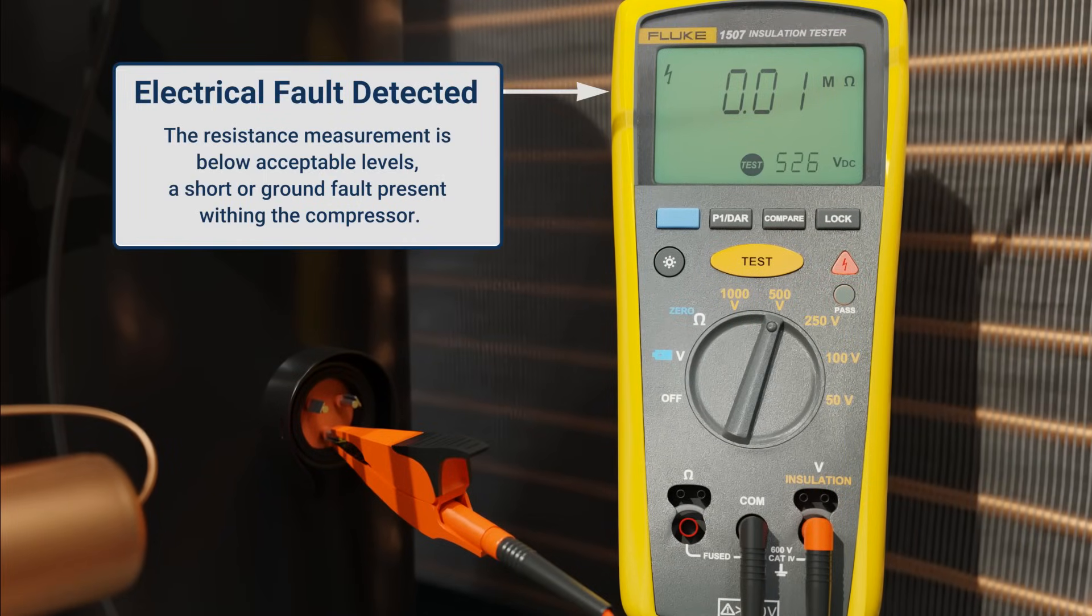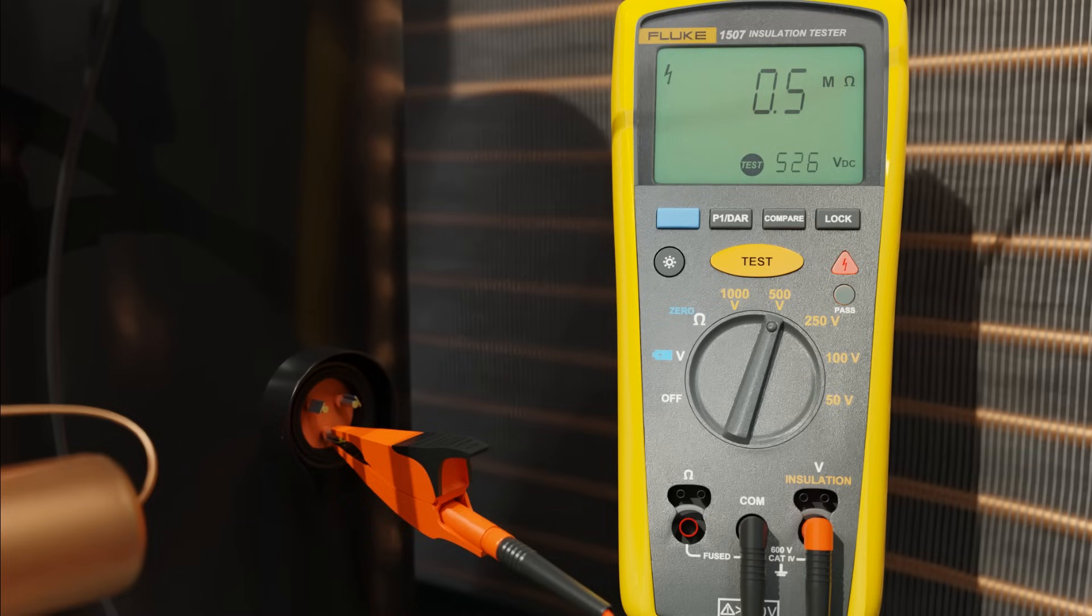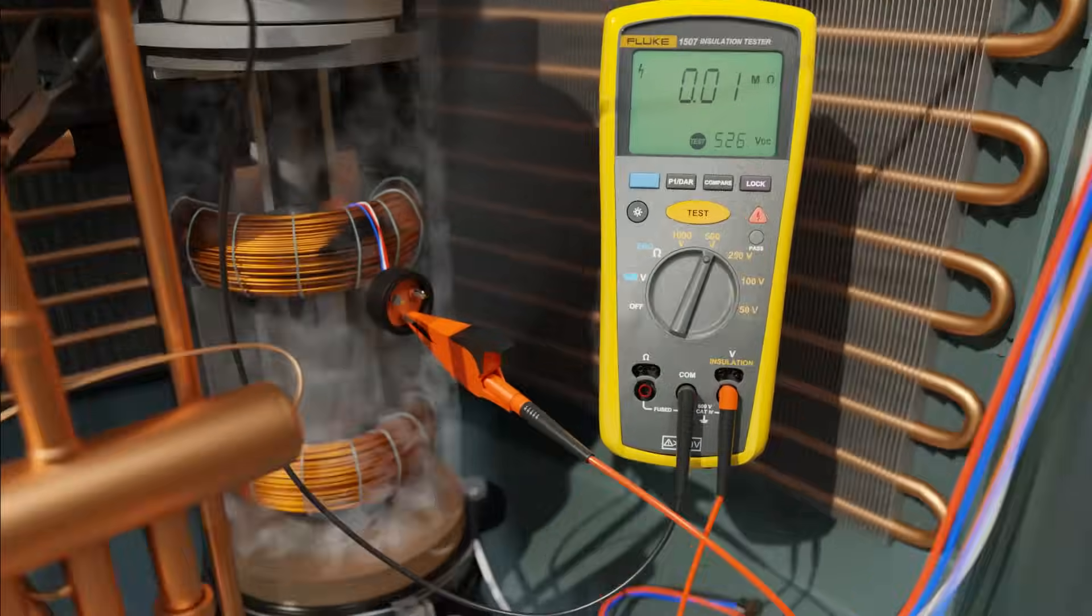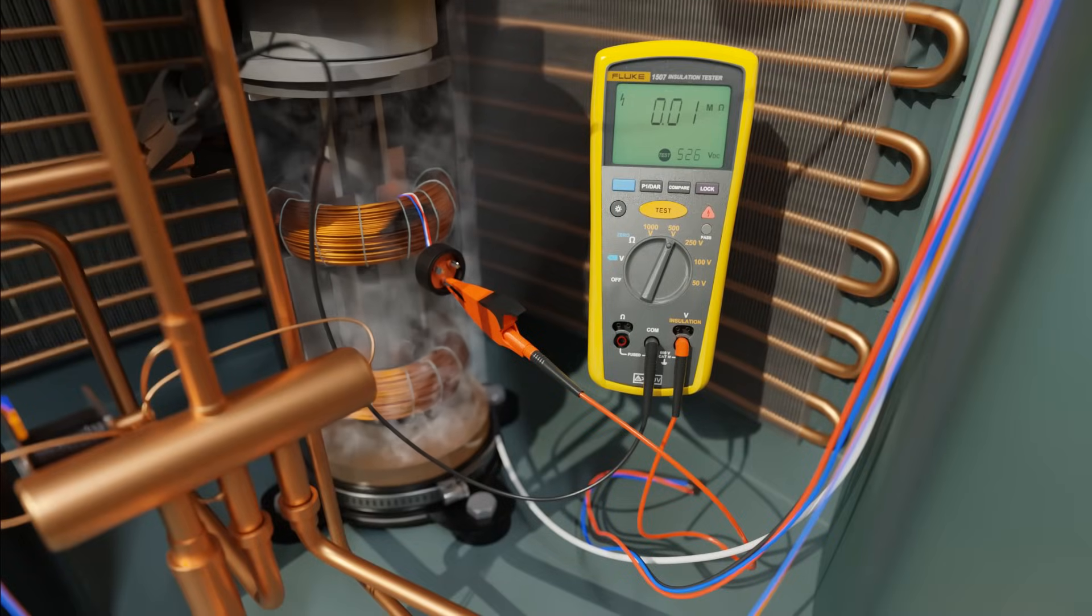Keep in mind that some compressors are still considered good all the way down to 0.5 megaohms from the terminals to ground. This 0.5 megaohms number comes from Copeland, especially for scroll compressors as the windings are immersed in refrigerant and potentially oil.